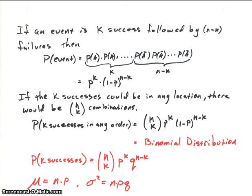So let's take a look at how to develop the probability of k successes out of n. The first thing we want to do is look at: suppose we had k successes in a row, followed by n minus k failures — in that specific order. That gives us a total of n trials.